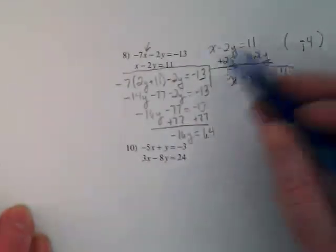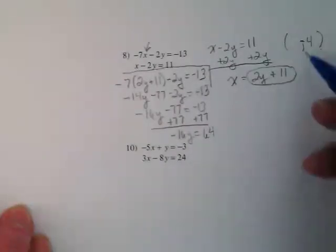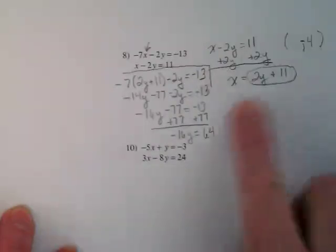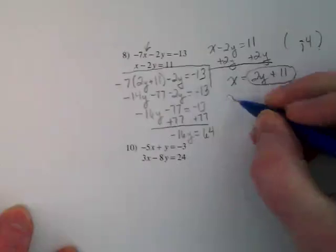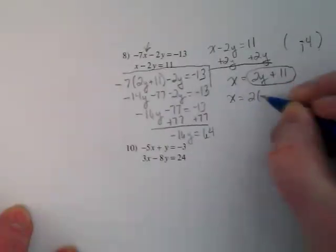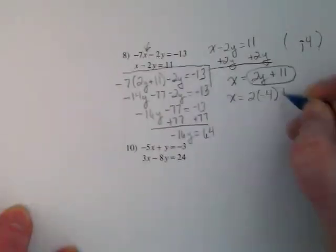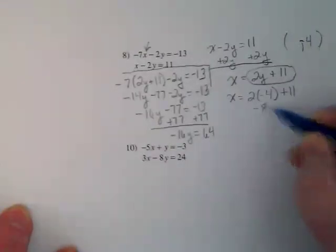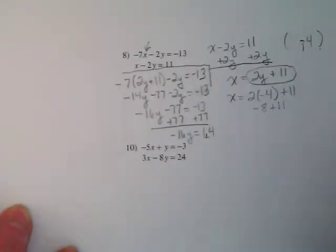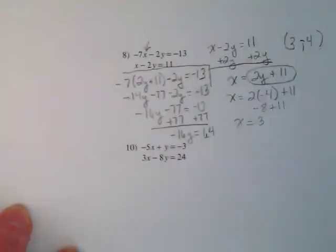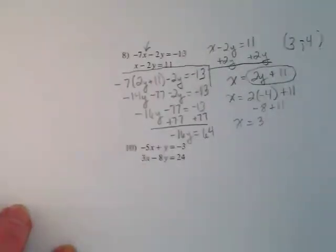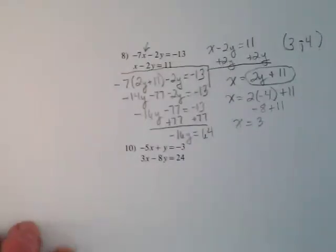And then I can go back to either one of the original equations and plug negative 4 in where y is, and we're going to find our x. I'm going to use the equation that solved for x because that will make it simple. X is equal to 2 times negative 4 plus 11. Negative 8 plus 11, and x is equal to 3. So this is 3 comma negative 4. That's a substitution method.